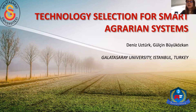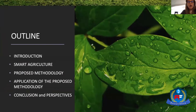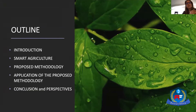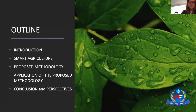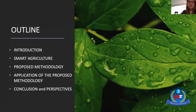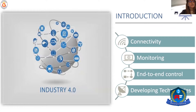The first one is the technology selection for smart agrarian systems. My presentation outline is: I will give a brief introduction, then talk about defining smart agriculture, then show our proposed methodology, present a case study, and finish with the conclusion and perspectives.